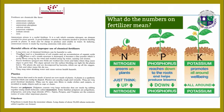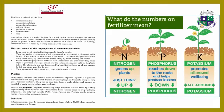Harmful effects of the improper use of chemical fertilizers: long-term use of chemical fertilizers can be harmful to soils. They can lead to a breakdown of soil crumbs and an accumulation of organic acids. When a soil crumb structure is destroyed, it becomes a fine powder which is easily blown away by the wind and washed away by water, causing soil erosion. Excess fertilizers spread onto fields are washed into rivers and lakes, where they cause algae to grow fast and spread over the surface, blocking out light to the plants below.